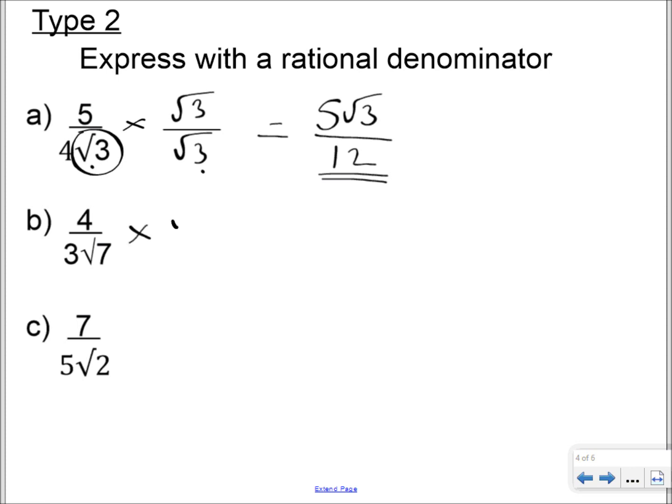So, for this one, we just multiply by root 7 over root 7, and that leaves me with a numerator of 4 root 7, and then root 7 times root 7 is 7, and 3 times 7 is 21. Again, we can't simplify 4 over 21, so that's our final answer.